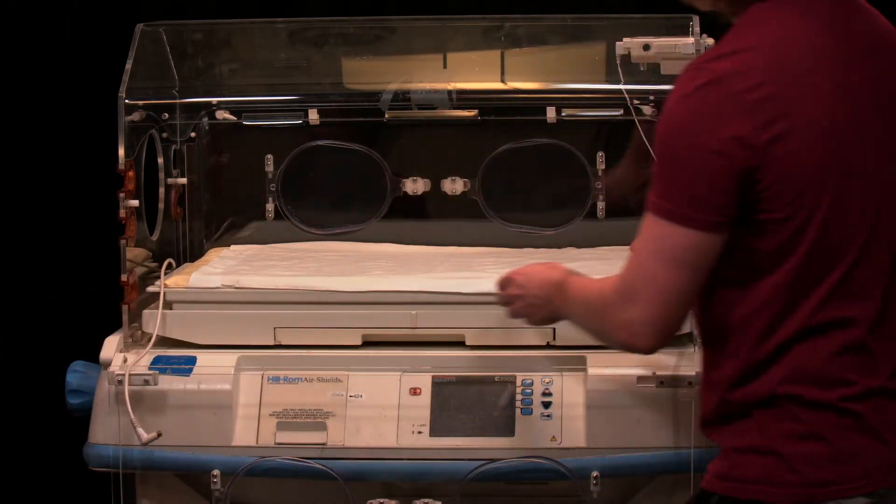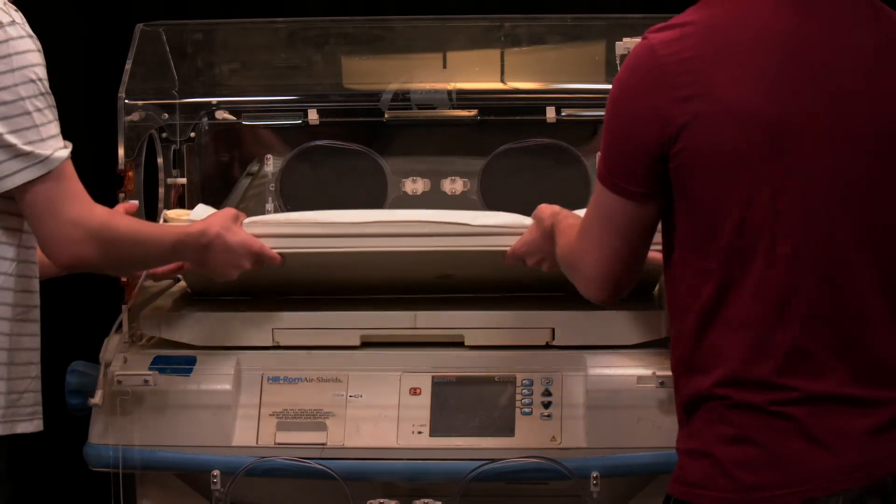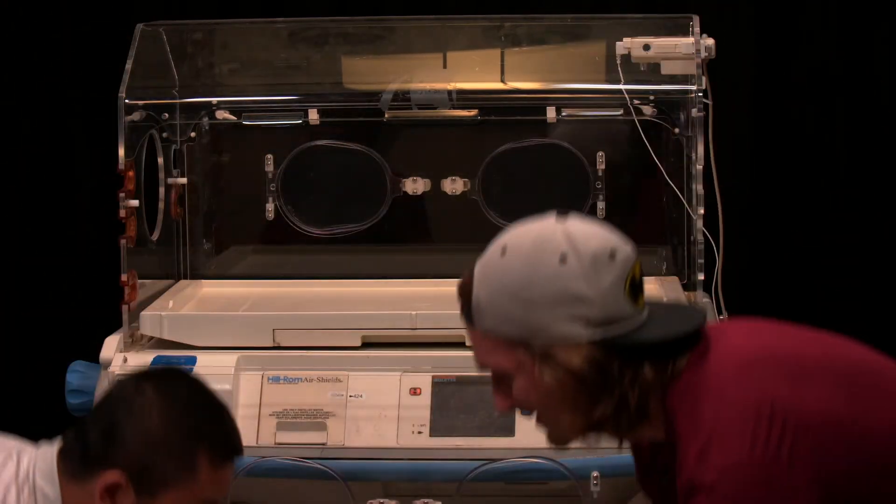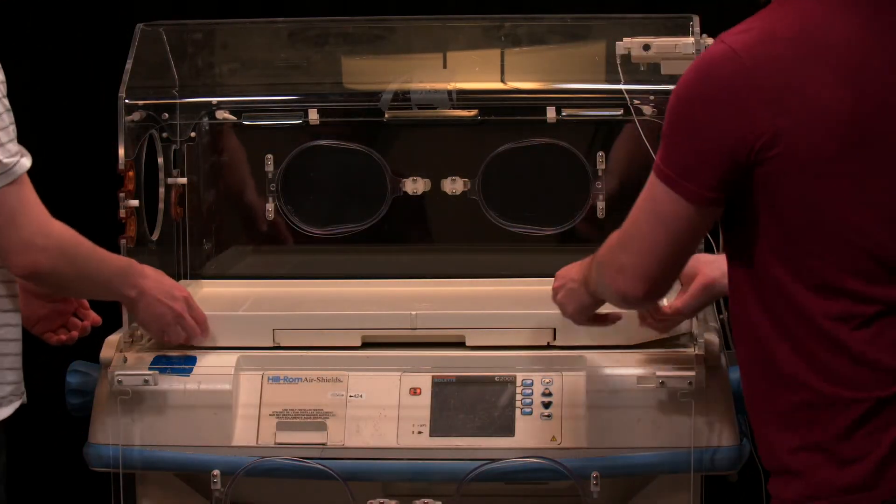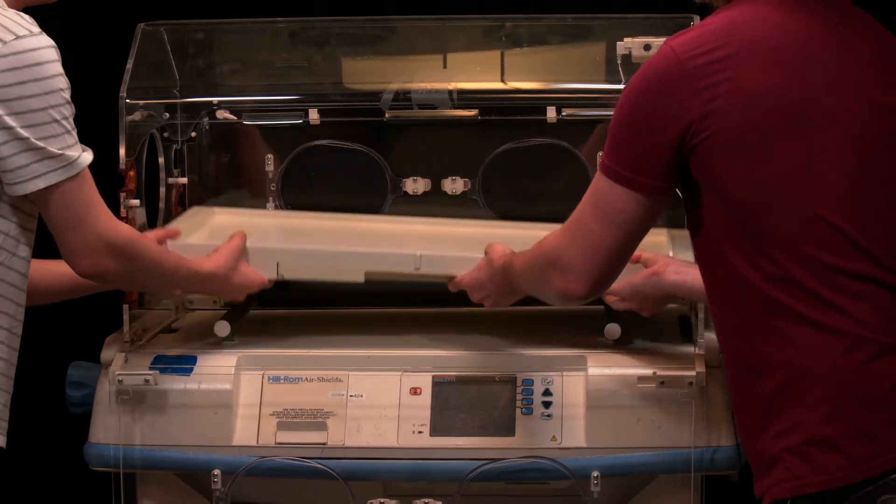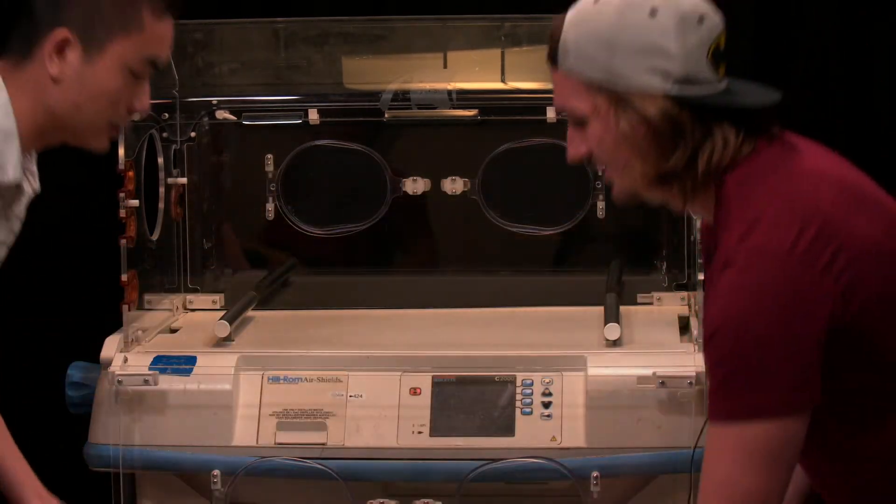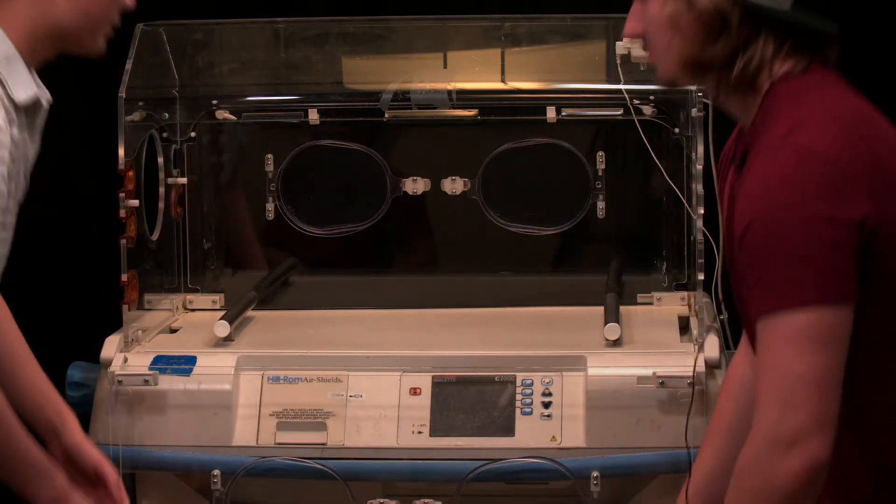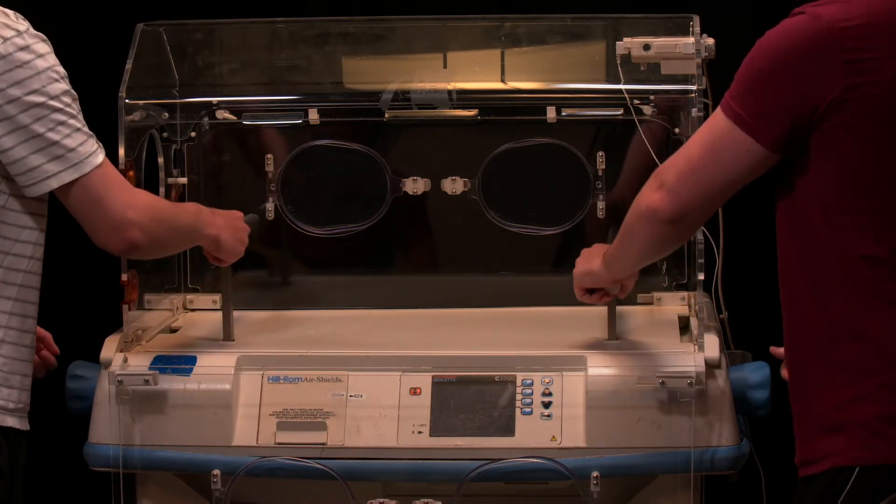Next, you've got to take out the infant bed. Next, you've got to take out the rails and you can just pull those out.